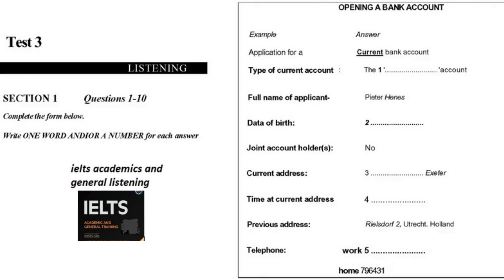Do you have a daytime telephone number? Yes, I think the number at my office is 606295 — just a minute, let me check — oh no, sorry, 616. I'm not used to it yet. Would you like my home number too? Yes please. It's 796431. Are they both local numbers? Yes.